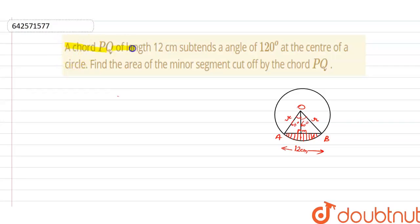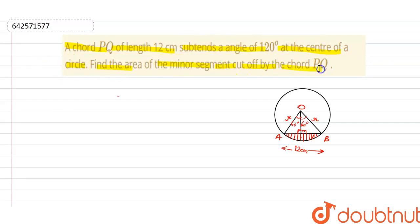A chord AB of length 12 centimeters subtends an angle of 120 degrees at the center of a circle. Find the area of the minor segment cut off by the chord AB.